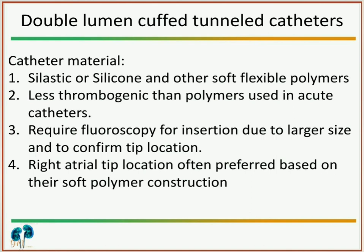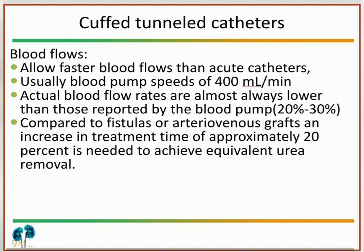The double lumen cuffed tunneled catheter is made up of silastic or silicone and other soft flexible polymers. Its advantage is that it is less thrombogenic than the polymer used for acute catheters. Insertion requires fluoroscopy due to its large size and to confirm tip location. In tunneled catheters, blood flow can be set faster than acute catheters, with pump speed around 400 ml per minute.